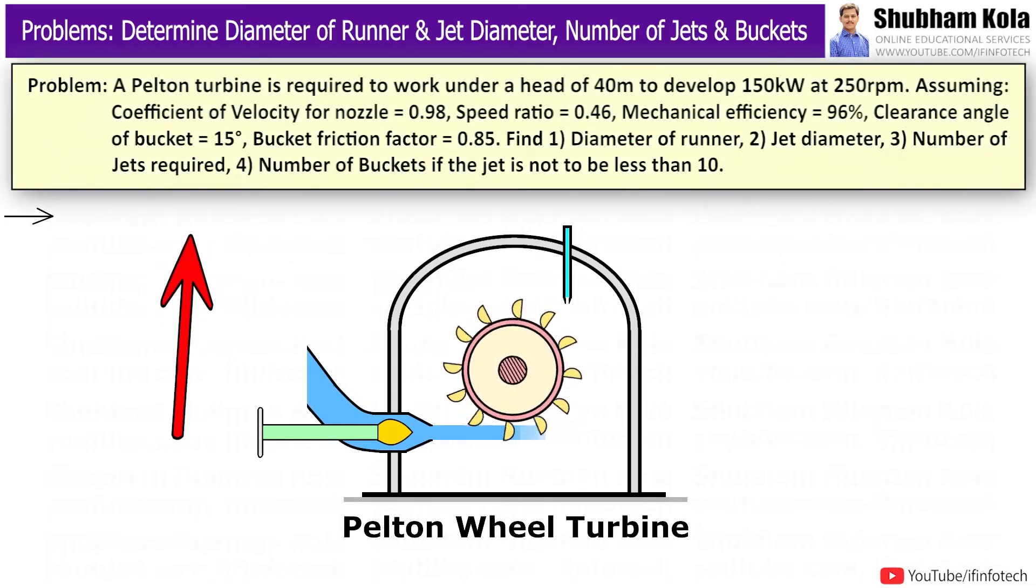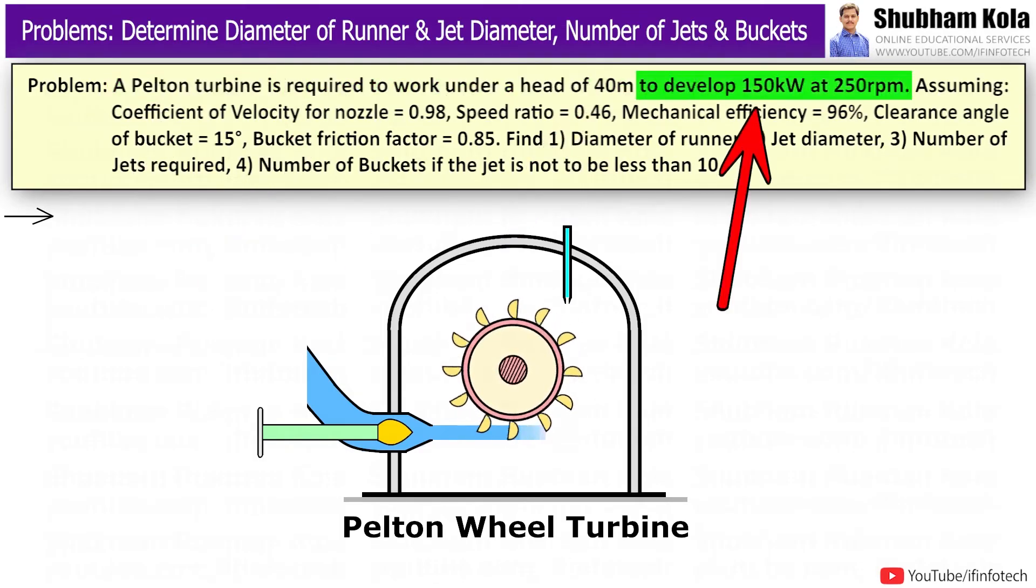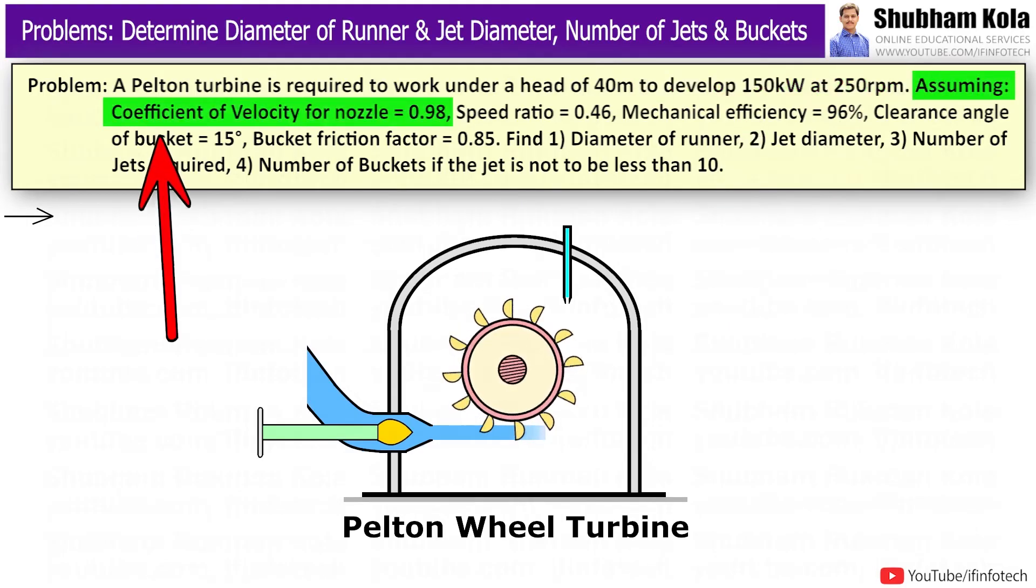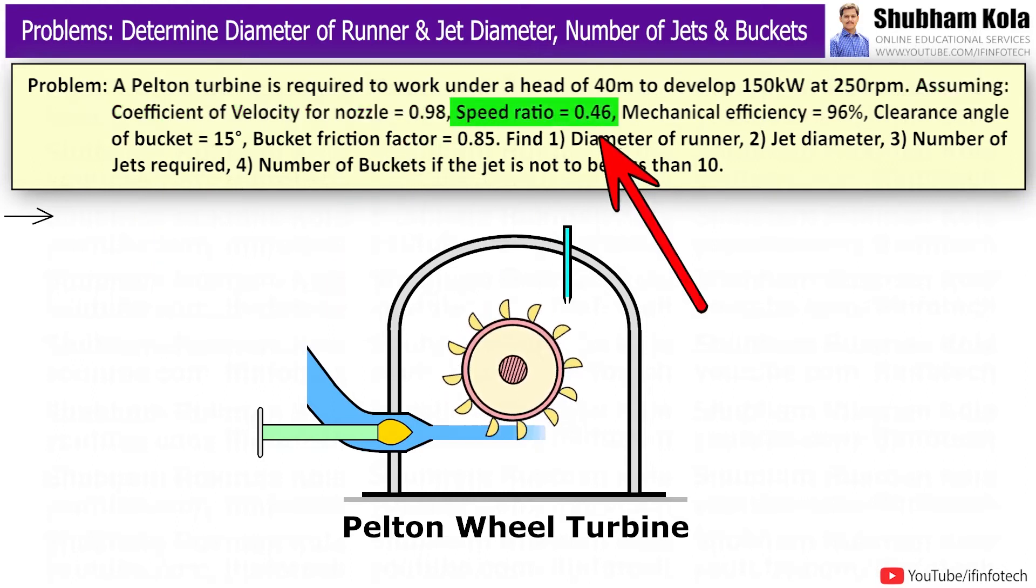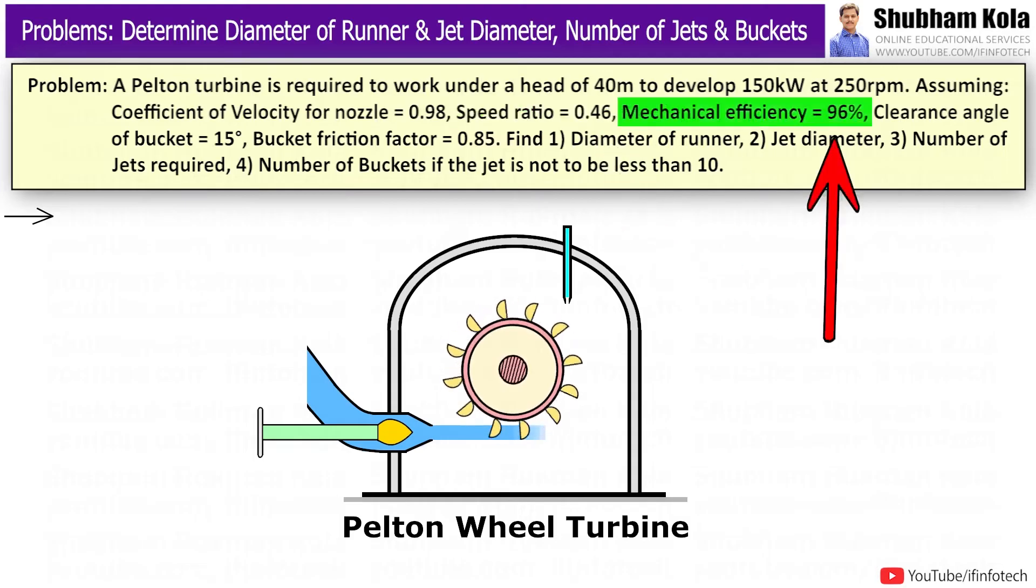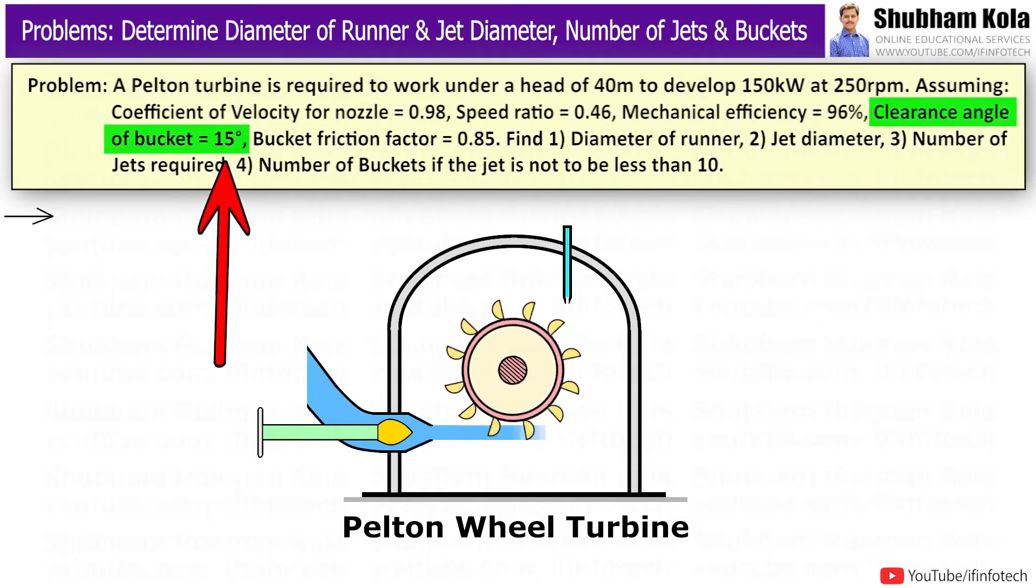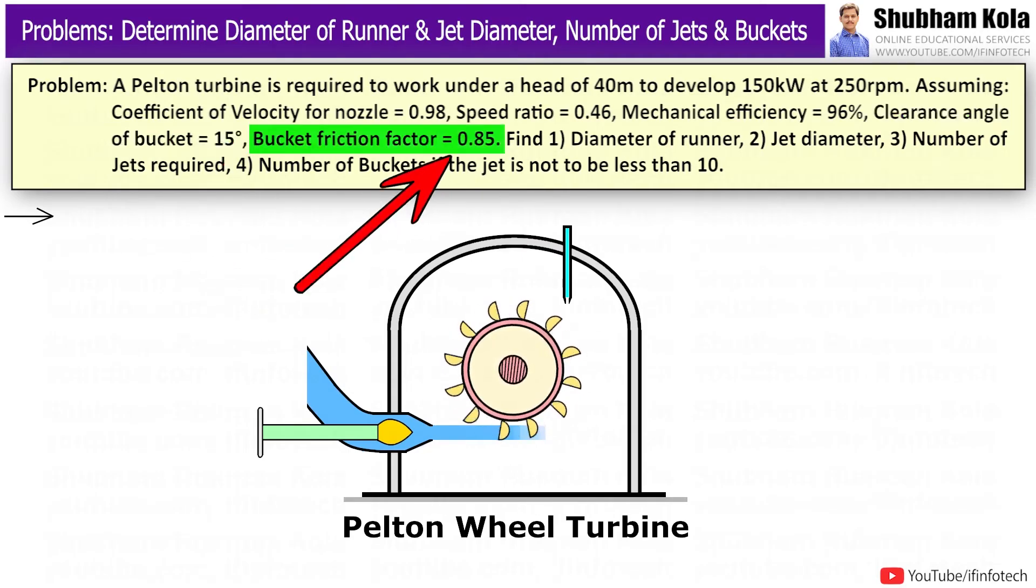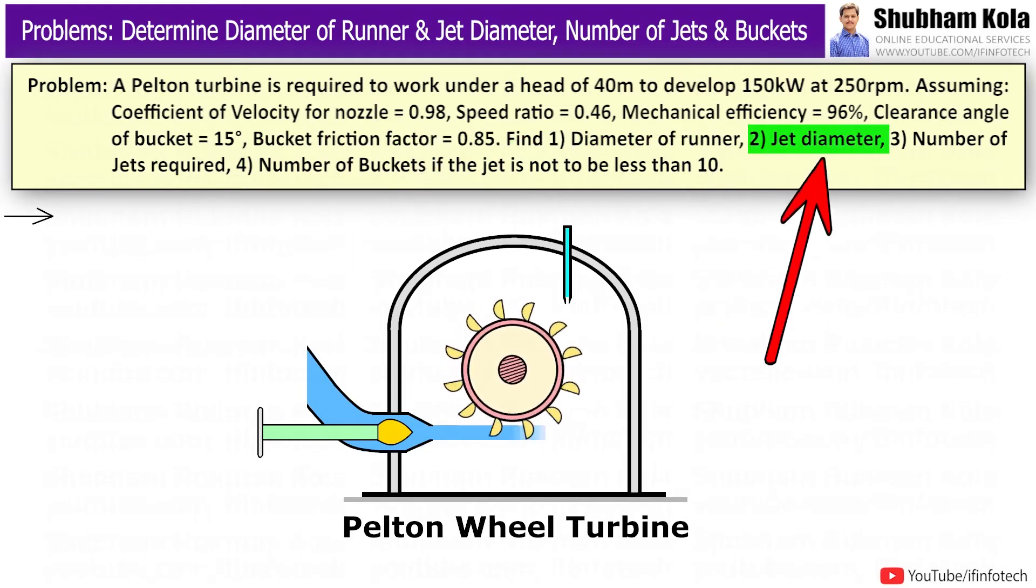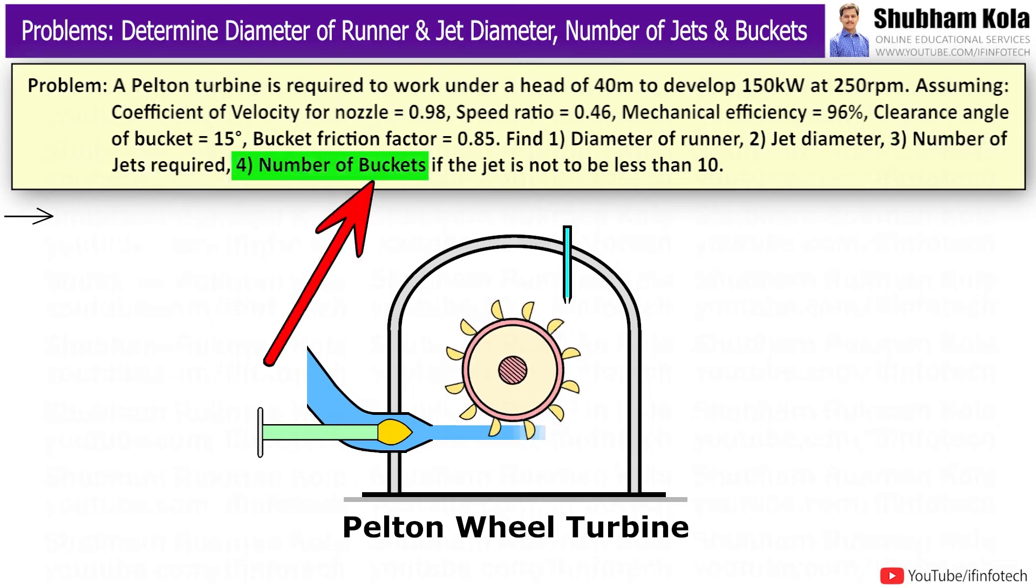Here is the problem statement: A Pelton turbine is required to work under a head of 40m to develop 150kW at 250rpm, assuming coefficient of velocity for nozzle equal to 0.98, speed ratio equal to 0.46, mechanical efficiency equal to 96%, clearance angle of bucket equal to 15°, bucket friction factor equal to 0.85. Find 1) Diameter of runner, 2) Jet diameter, 3) Number of jets required, 4) Number of buckets.